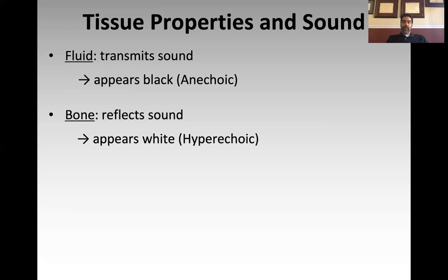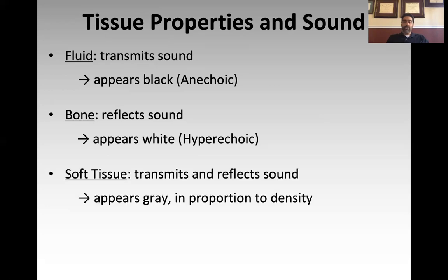Bone, on the other hand, reflects almost all of the sound back to the crystal. So if you look at bone on ultrasound, the cortex will appear very white or hyperechoic, and then there will be a shadow behind it. So bone will have a very thin hyperechoic line representing the cortex, and then a shadow deep to that line as no sound gets through. Soft tissue is a combination of fluid density and connective tissue density, so depending on how dense the tissue is, soft tissue will do a combination of transmitting and reflecting sound, appearing in varying shades of gray.